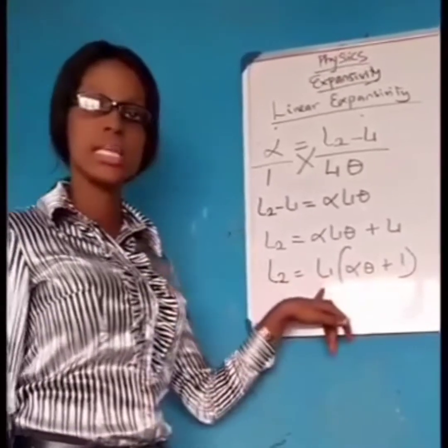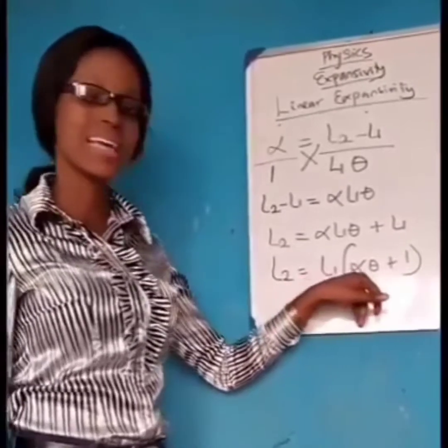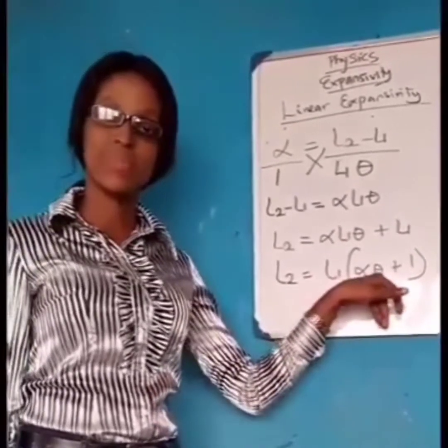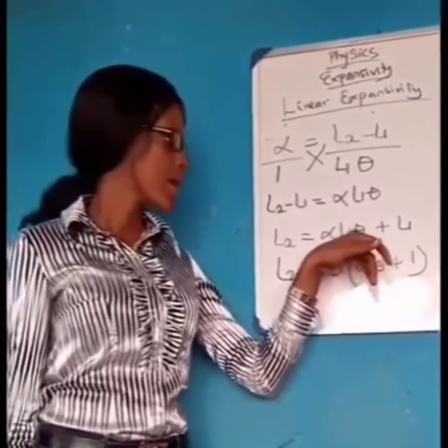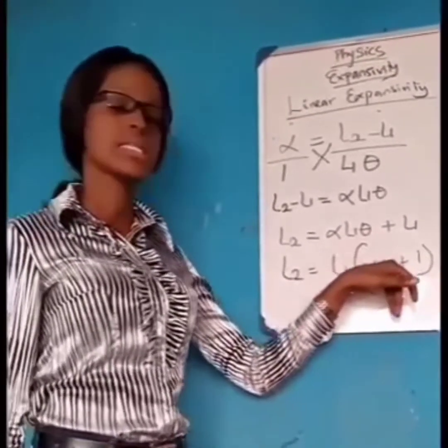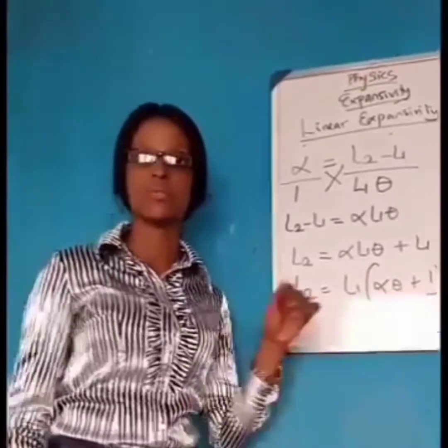Therefore, when you are asked to find the new length in linear expansivity, you can simply use the formula L2 equals L1 bracket alpha theta plus 1, where L1 is the initial length, alpha is the linear expansivity which is mostly given, and theta is the change in temperature.